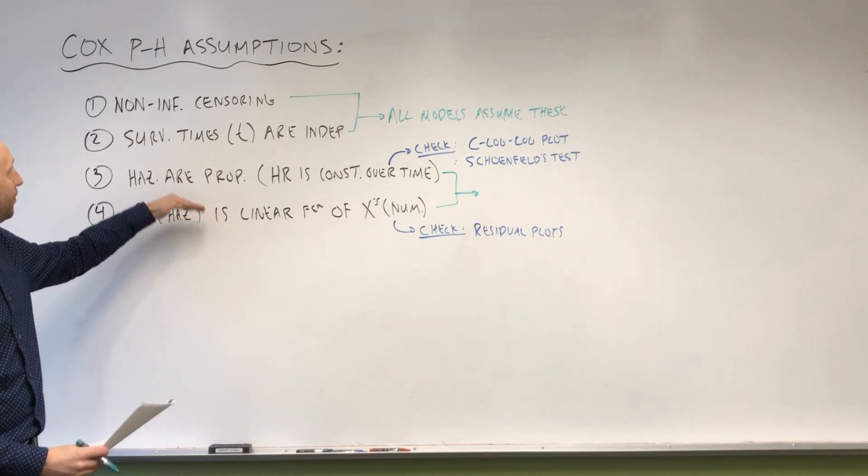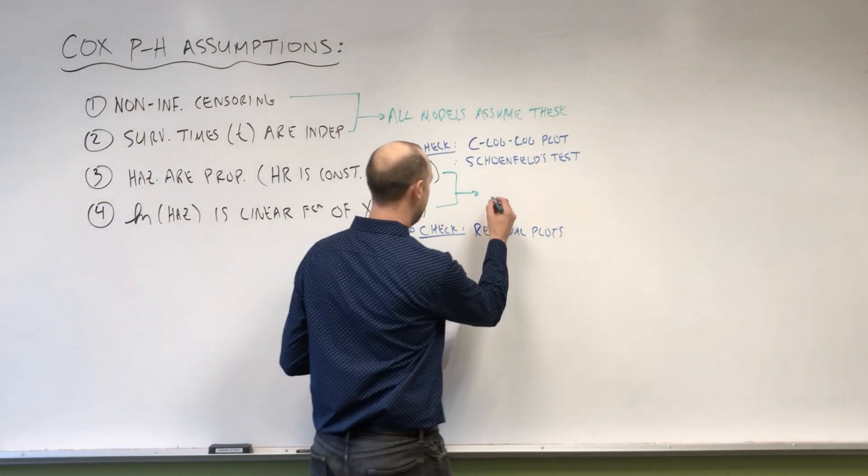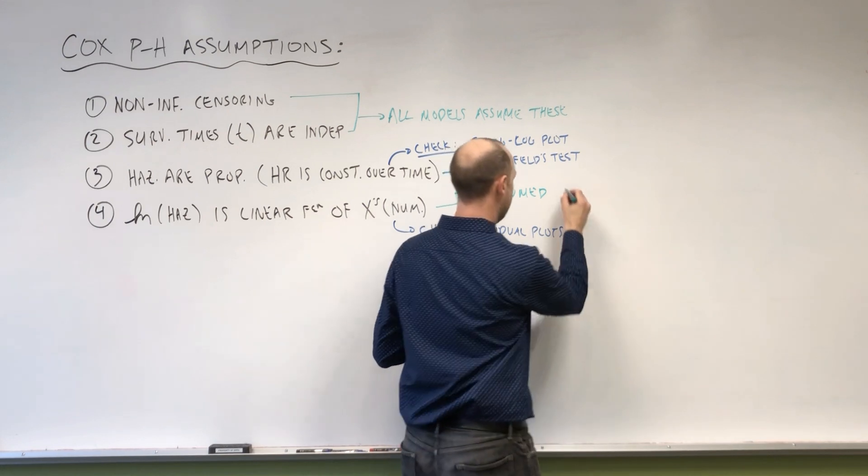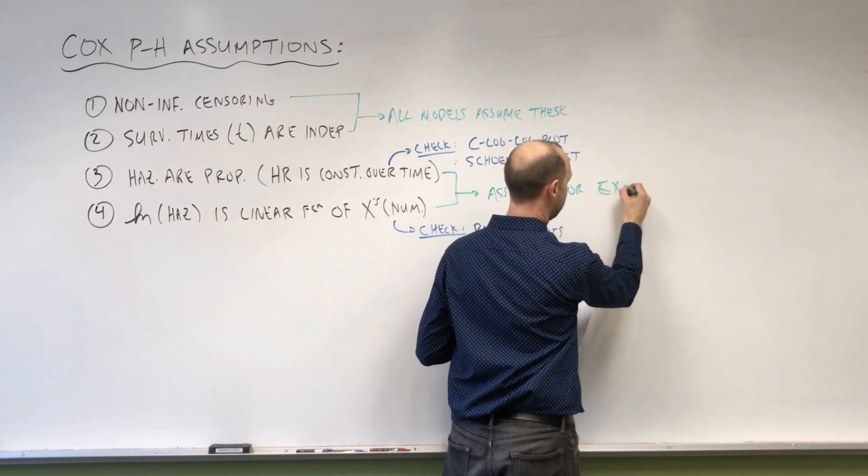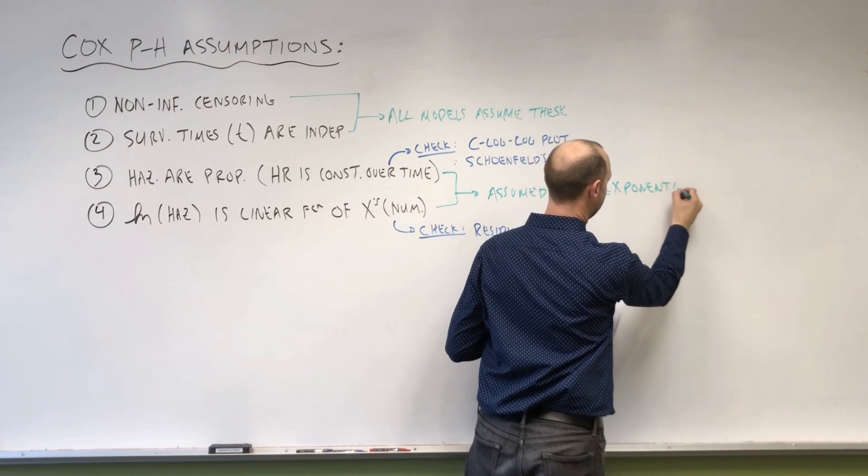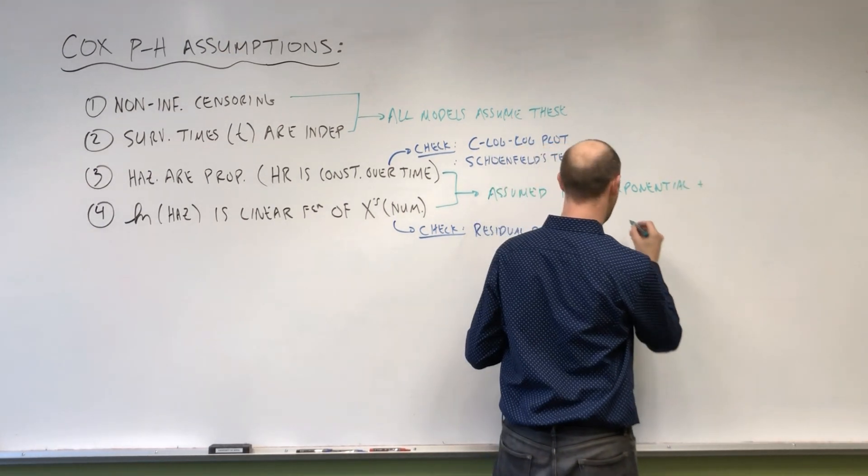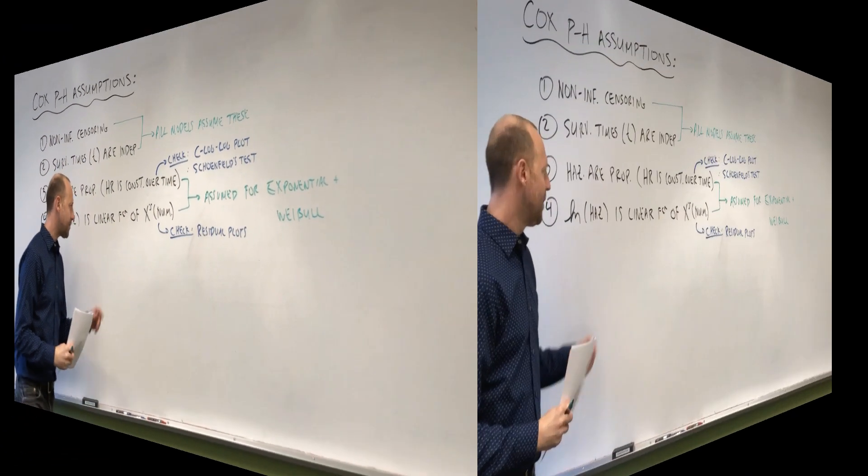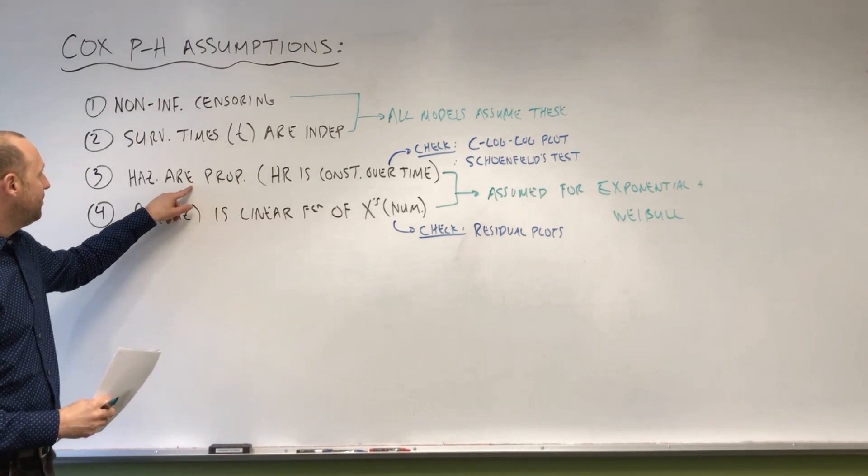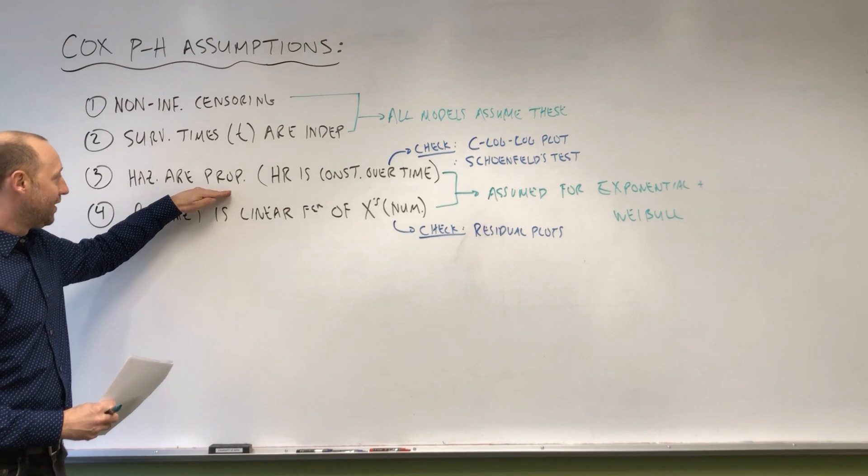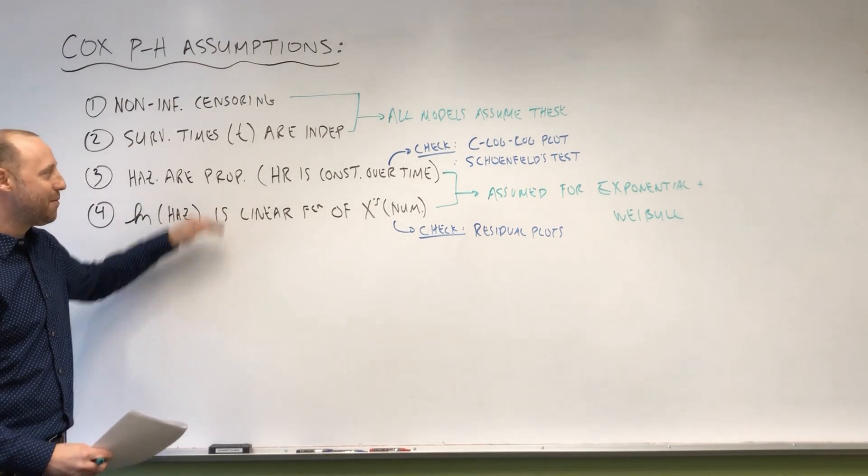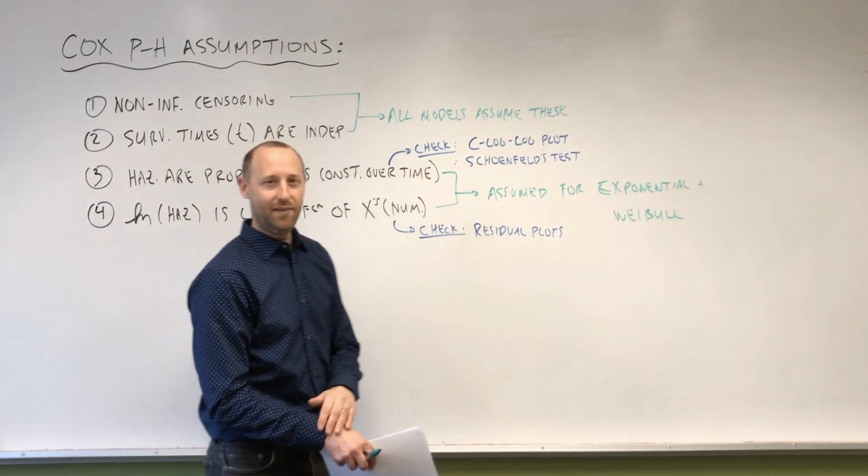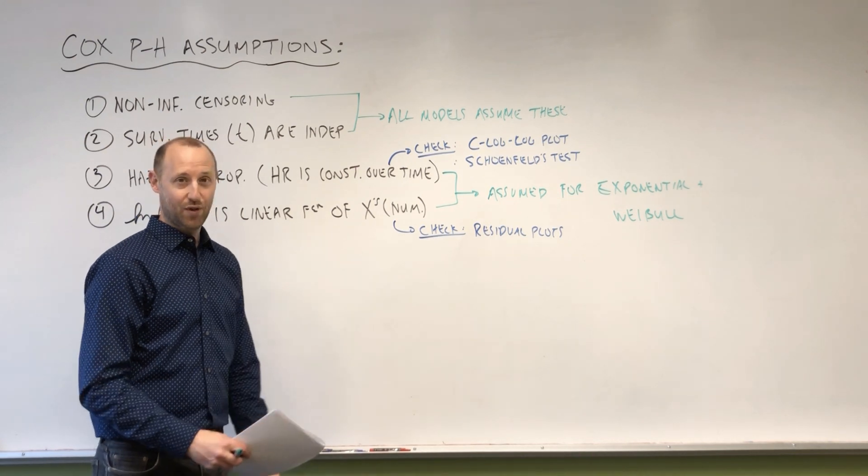And then an important point about assumption number three and four, that these assumptions, while they're made in a Cox proportional hazard model, they're also assumed. These assumptions are also made for the exponential, as well as the Weibull, which is the accelerated failure time model. So I thought it was important to mention that, especially for this one, because Cox proportional hazard model, the proportional hazard gets put in the name of the model, although the exponential model also assumes proportional hazards. So it assumes that the effect of X variables do not change over time.